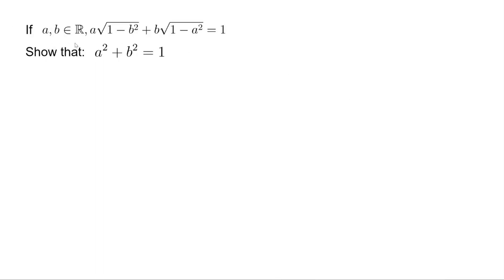If a and b are two real numbers and we have a times square root of 1 minus b squared plus b times square root of 1 minus a squared equals 1, we want to show that a squared plus b squared equals 1.